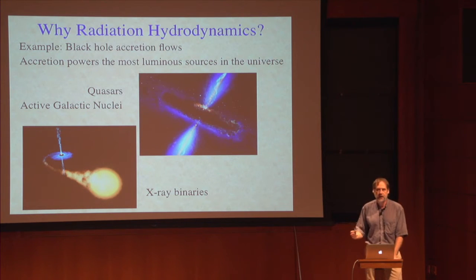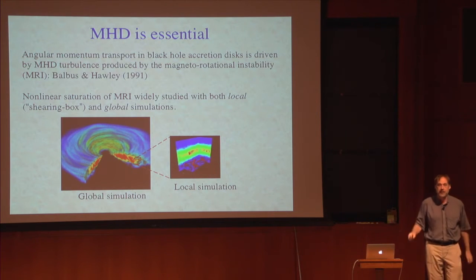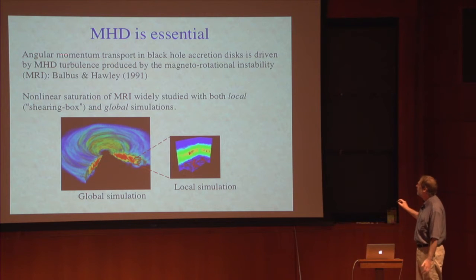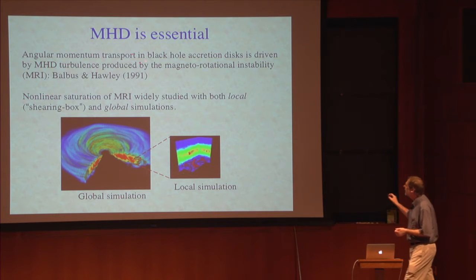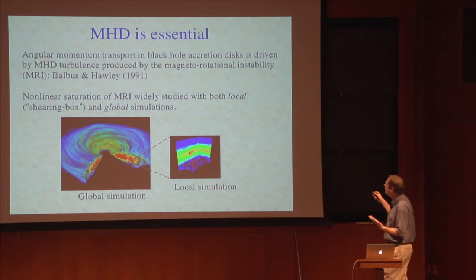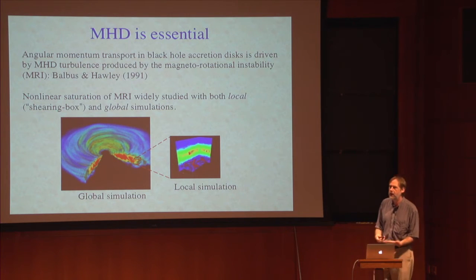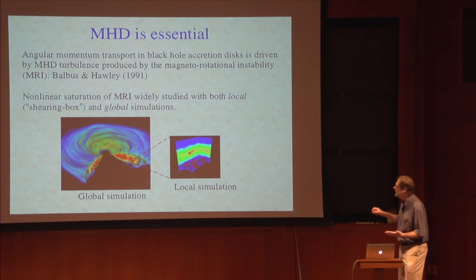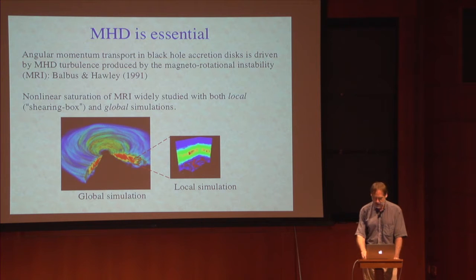What would we need to study these systems? We need MHD, because angular momentum transport controls the accretion of plasma in these systems. Angular momentum transport itself is controlled by MHD turbulence produced by a linear instability in Keplerian rotating flows — the so-called MRI, the magnetorotational instability. So if we want to study ab initio accretion onto black holes, we're going to need to be doing at least MHD.